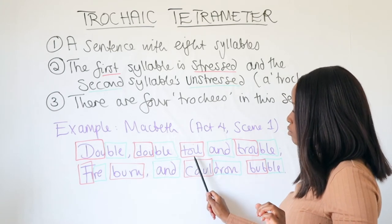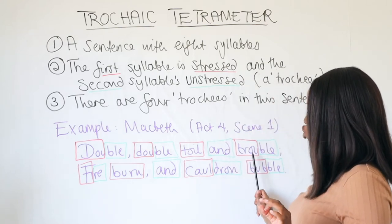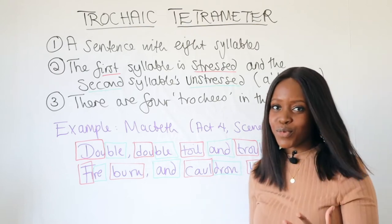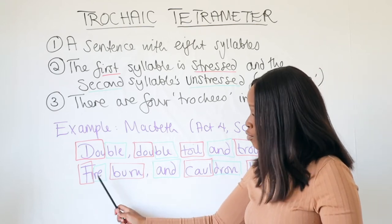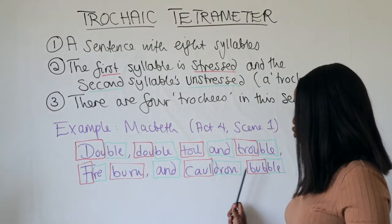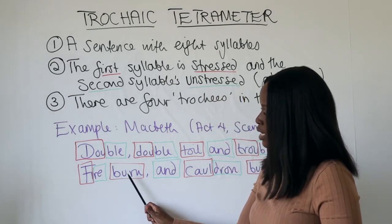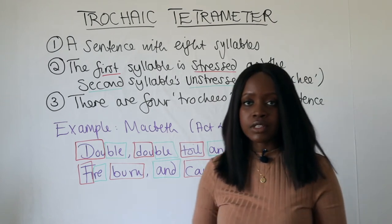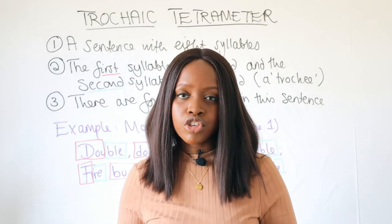The same pattern continues: 'toil' takes a little bit longer to pronounce, and '-and' takes a bit shorter; 'trou-' in trouble takes a little bit longer while '-ble' takes a little bit shorter. Then 'fire burn and cauldron bubble' follows the same alternating pattern — each stressed syllable takes longer to pronounce, each unstressed syllable takes shorter — giving us the full four trochees across both lines.